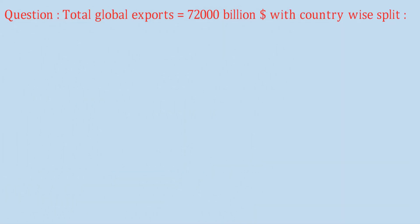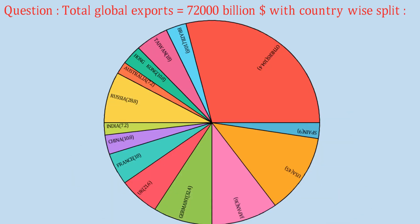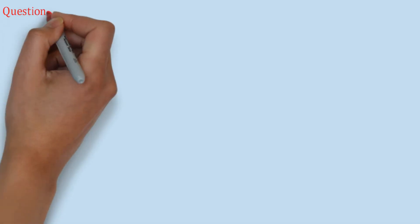The question says that the total global exports are equal to 72,000 billion dollars with a country-wise split. The country-wise share of their exports is represented in the form of a pie chart. The names of the various countries are given — like Brazil, Taiwan, Hong Kong, and others — and the value in brackets in front of each country represents its angle in degrees. Since the entire angle covered by a circle is 360 degrees, when we say Taiwan is 18 degrees, it means Taiwan has an 18-degree out of 360-degree share of exports worth 72,000 billion dollars.